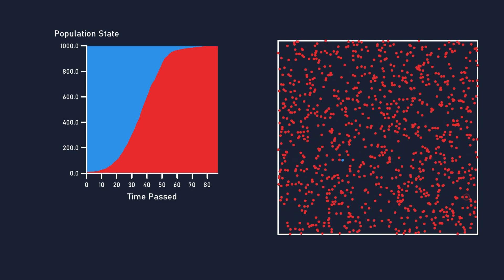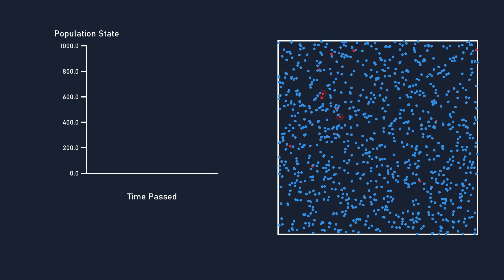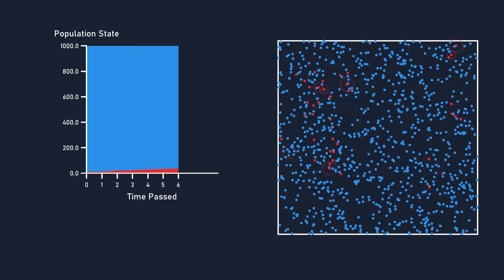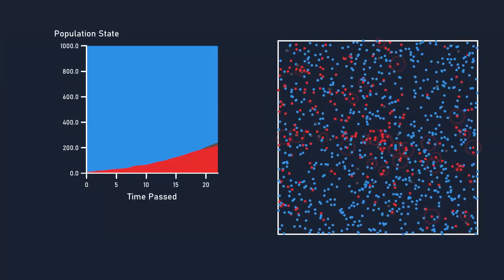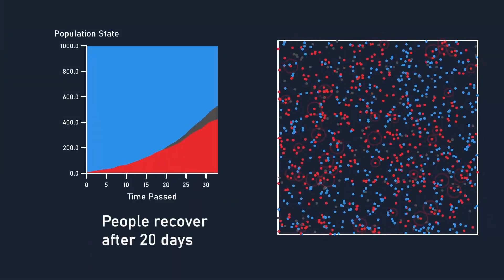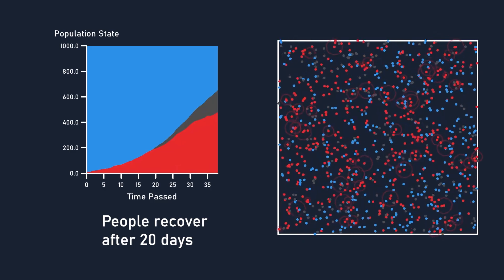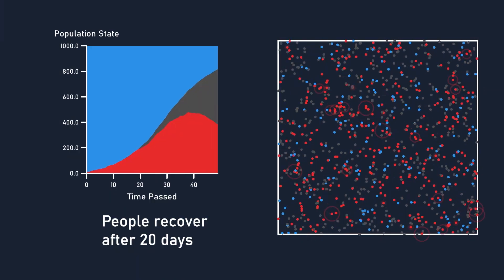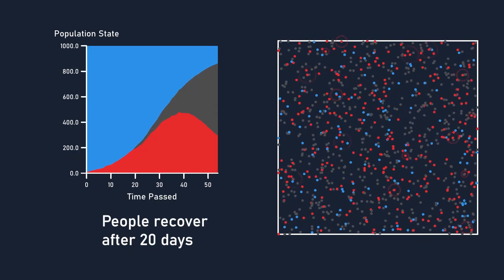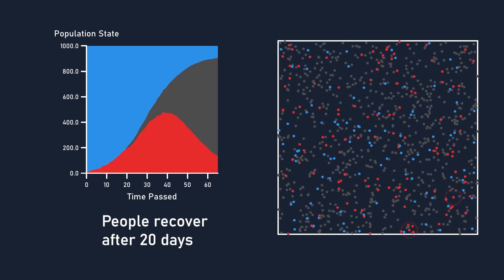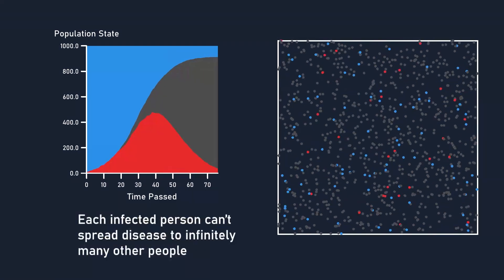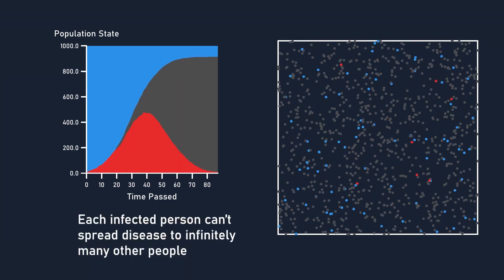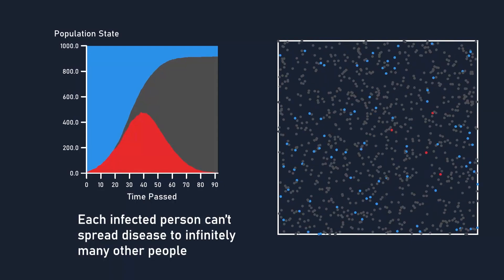This creates what's known as a logistic curve. However, in the SIR model, people are only infected for a limited time — specifically 20 days — before they recover, just like many real diseases, which makes things more complicated. Most importantly, this means each infected person can only go on to infect a limited number of other people before recovering.